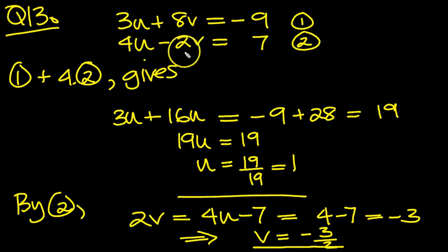4u is 4, minus 2 times this, which would be plus 3. 4 plus 3 is 7. Yeah, that looks fine. Good.